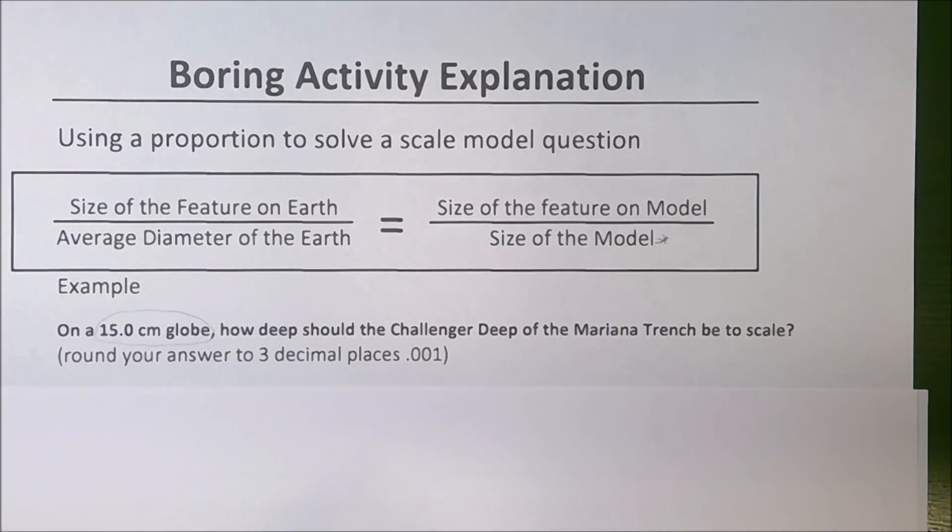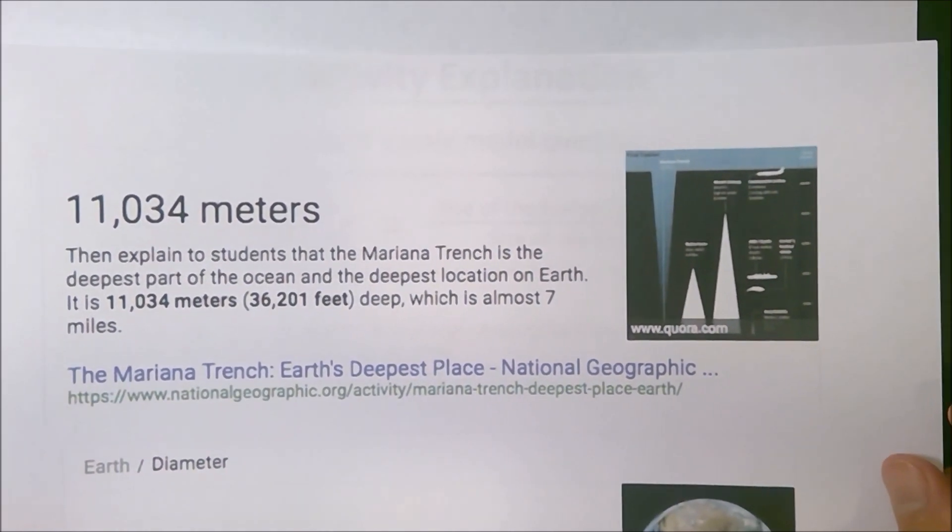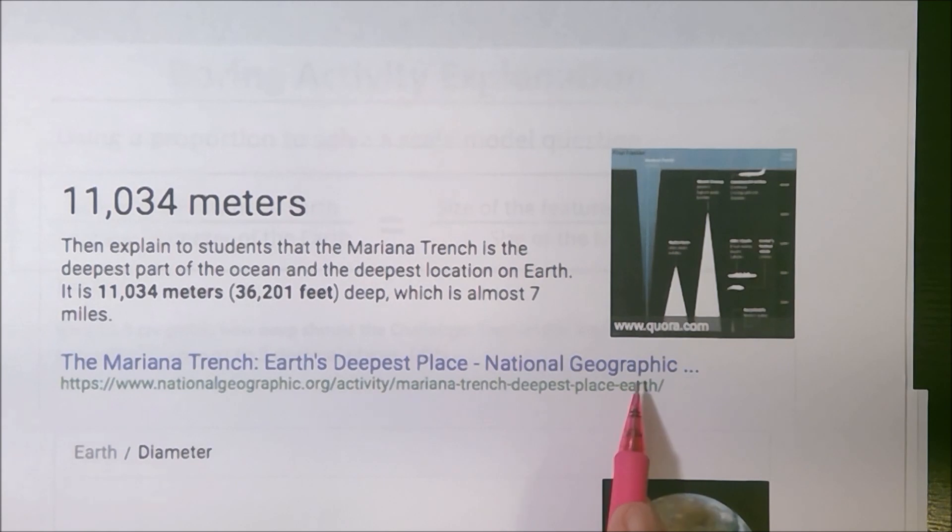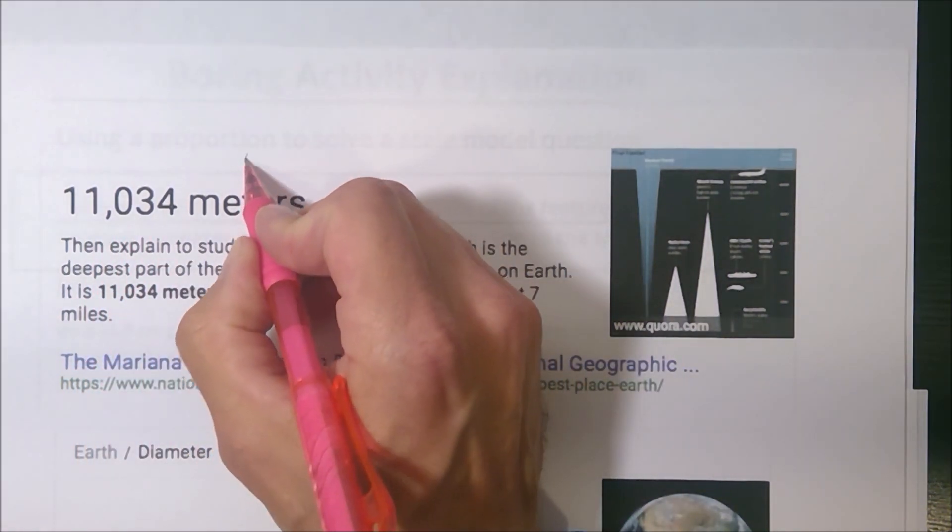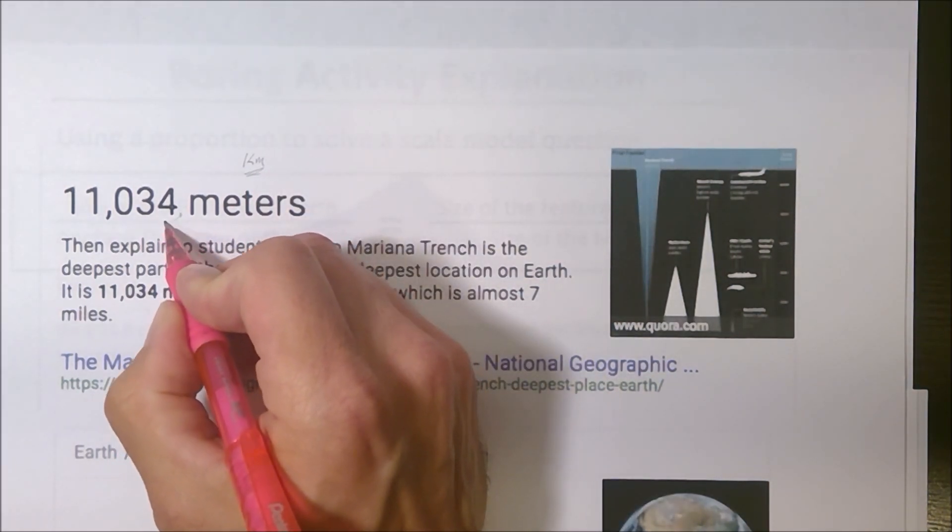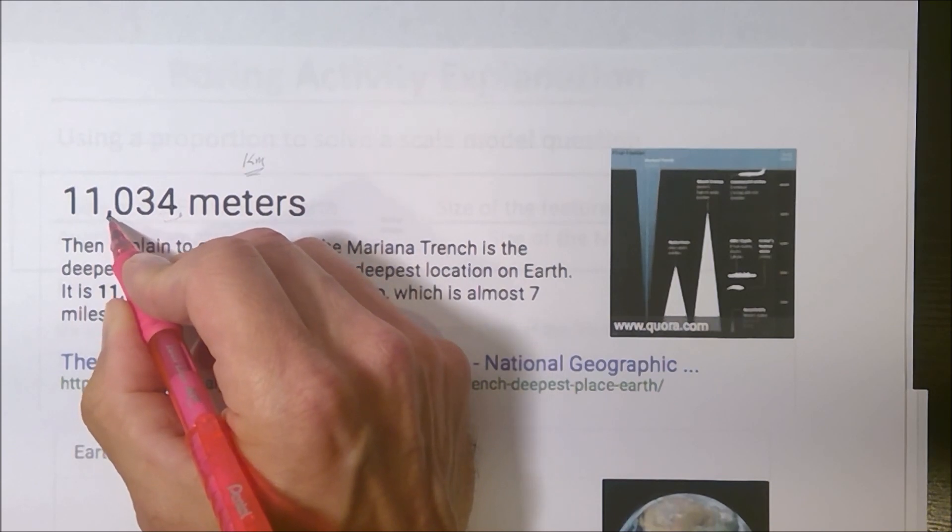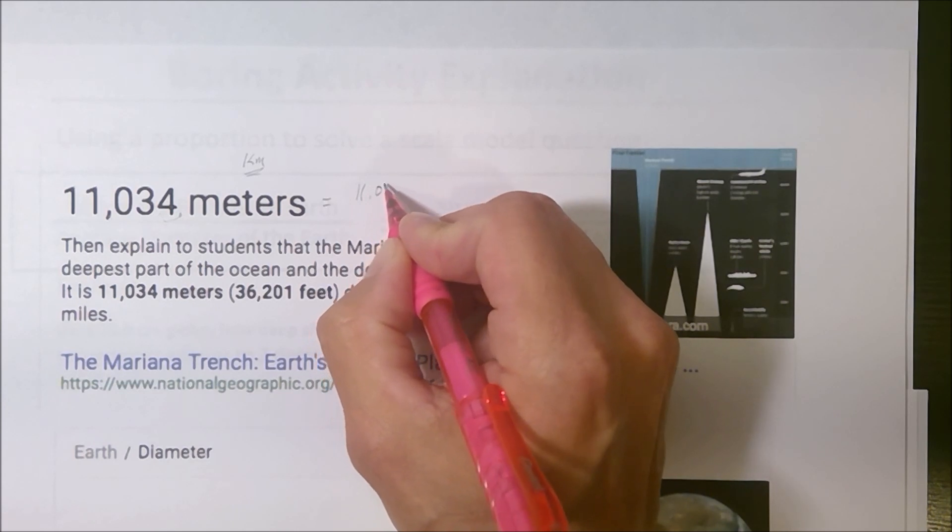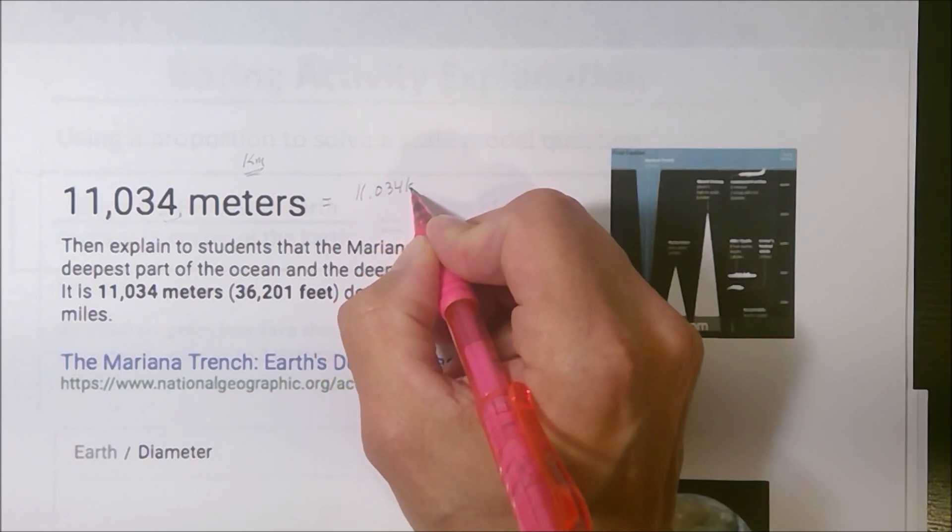So I went online, and when I Googled this, I found this. National Geographic seems to be a good source. They have the Mariana Trench as 11,034 meters. Now, the diameter of the Earth we know in kilometers. So to go from meters to kilometers, you're going to shift the decimal three places. So this would equal 11.034 kilometers.